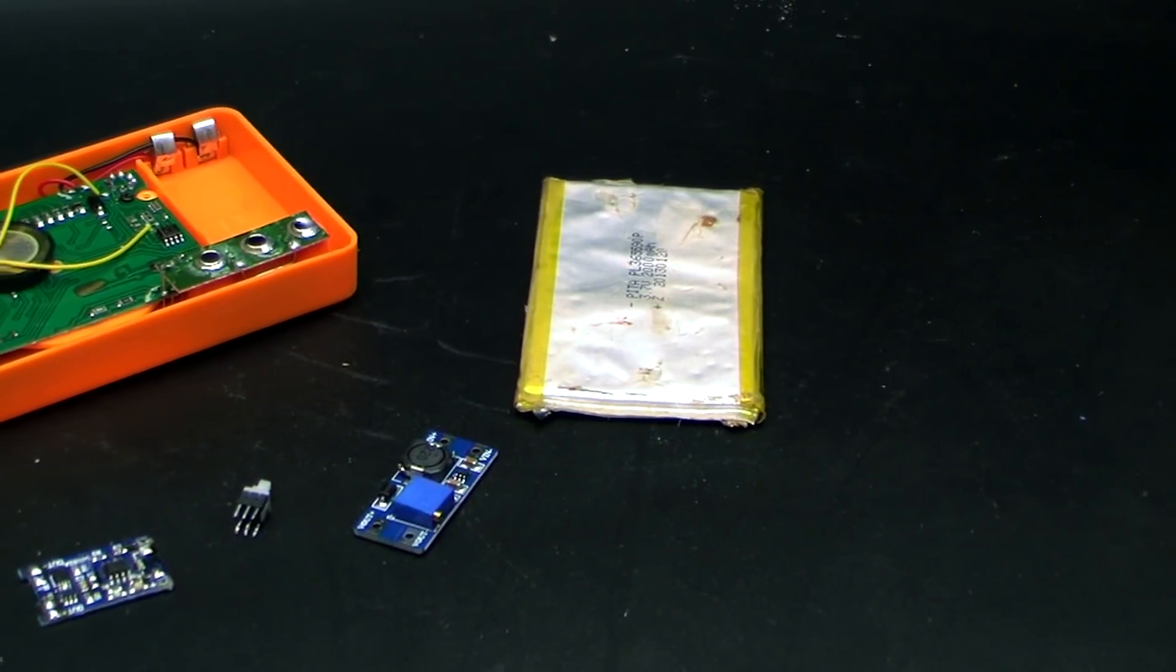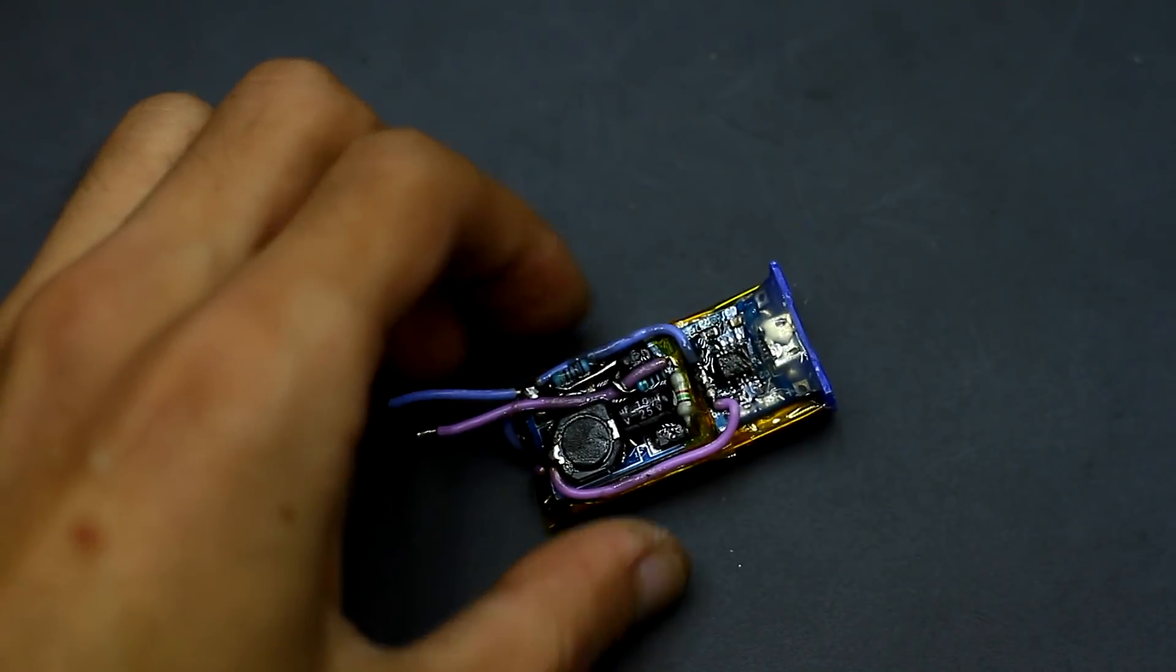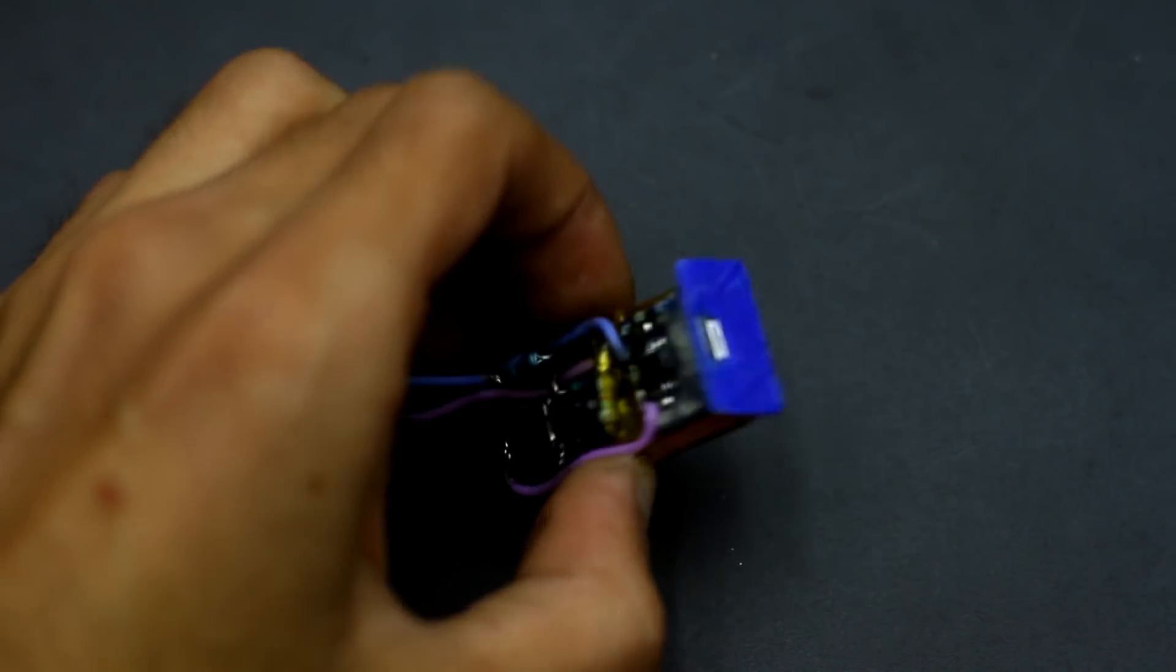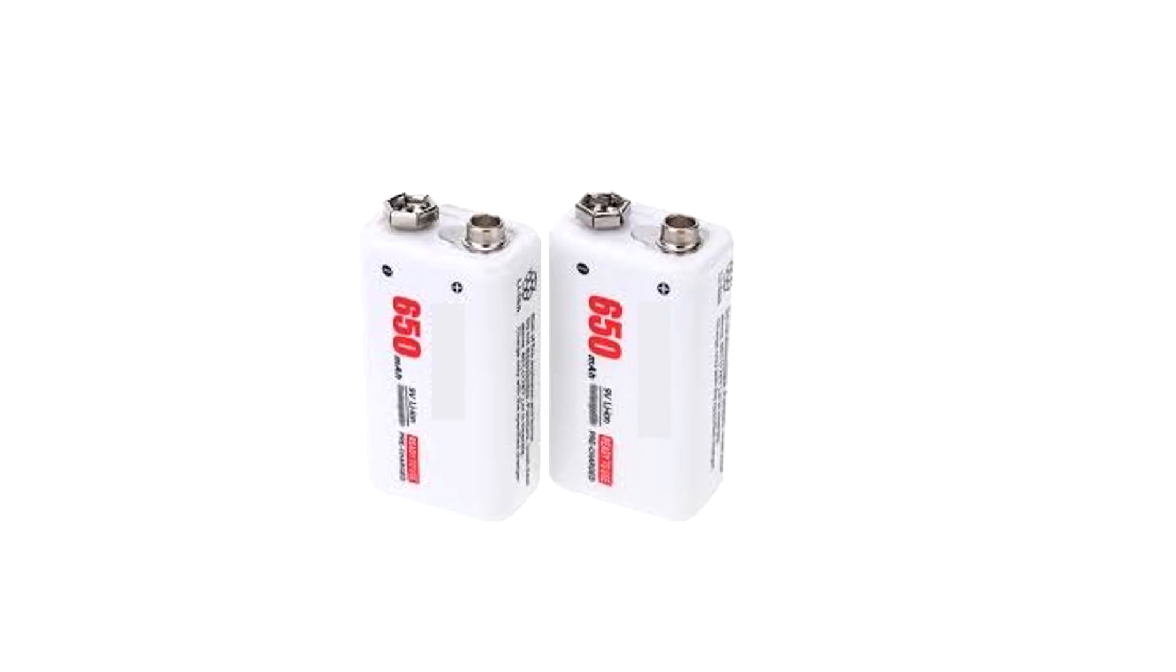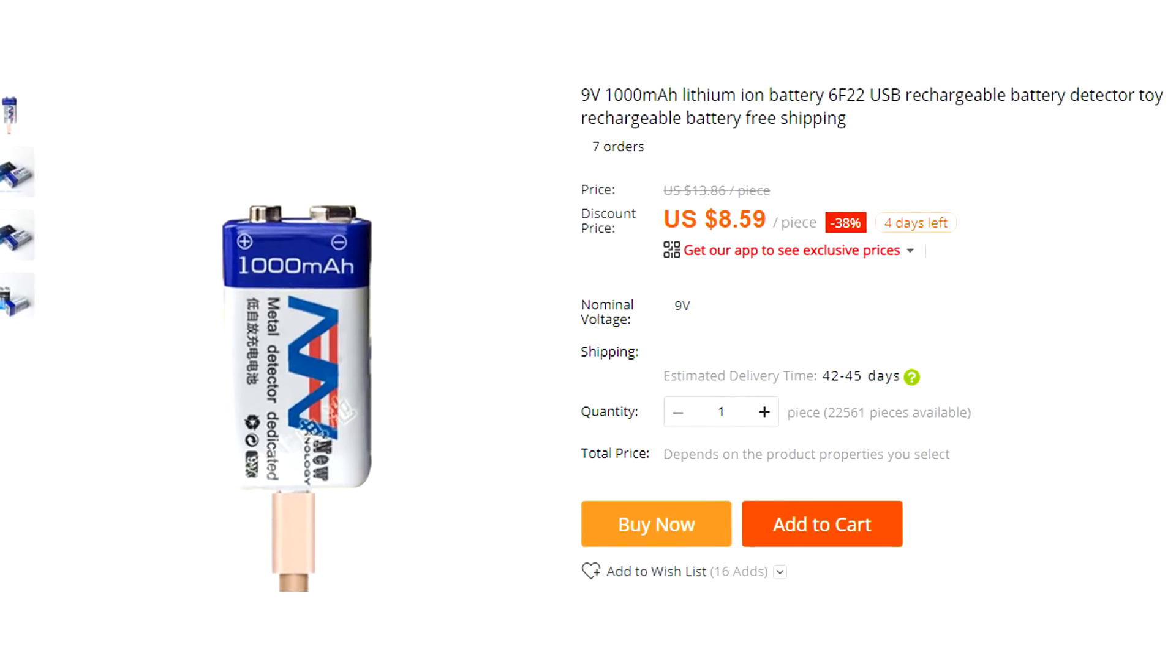In order to avoid additional alterations, many push it all into the box from the 6F22 battery itself. In addition, now we can buy a ready-made battery of this standard on a lithium battery with a converter. But the price is pretty decent.